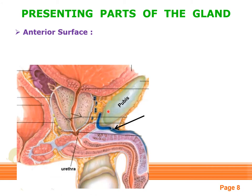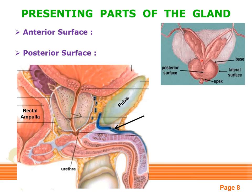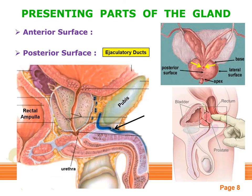Anteriorly, the anterior surface is related to retropubic fat, the pubic symphysis, and the body of the pubis. The posterior surface is related to the rectal ampulla, on which the gland rests. The posterior surface is also pierced by a pair of ejaculatory ducts, which traverse through the parenchyma obliquely to open into the prostatic part of the urethra. These are the terminal channels of the male genital system. The posterior surface can be palpated through per-rectal examination, as it lies only 4 cm above the anal orifice, making it the only part of the prostate gland that can be examined manually.